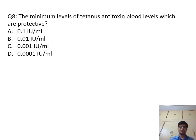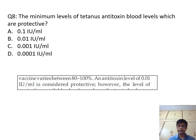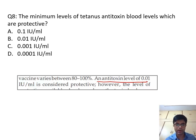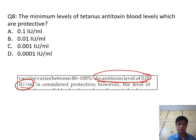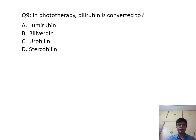Question number 7: Diphtheria vaccine is which type of vaccine? It is a toxoid type of vaccine. Toxoid vaccines include diphtheria, pertussis, tetanus, influenza subunit, and anthrax vaccine. Question number 8: Minimum levels of tetanus antitoxin in blood which are protective — directly from OPGY — antitoxin level of 0.01 international units per mL is considered protective. The answer is B — 0.01 international units per mL.